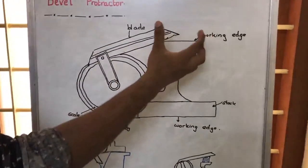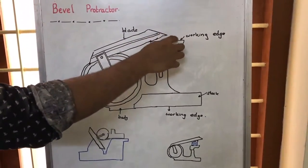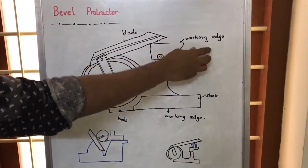We can keep a structure whose acute angle is to be measured in this place. That's why we are calling it a working edge.